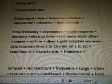C, gold crystals. C, wild data form is lines 1 to 22, cross-reference 1 to 27. Experiments, characteristic frequency. Infrared, red spectrum, frequency, range, other features not considered. Drude model, band structure, play important role, controls distance, Higgs signals.